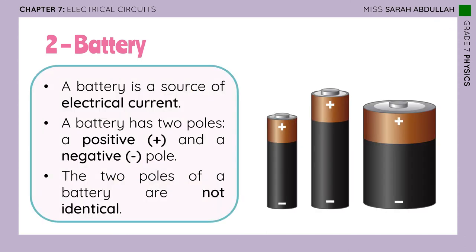A battery has two extremities also called poles. The positive pole is labeled plus and the negative pole is labeled minus. The two poles of a battery are not identical — they do not have the same effect, as shown by the motor rotating in opposite directions when the connections are switched. A battery, also called a dry cell, is a source of electrical current — it sends electrical current through the circuit.